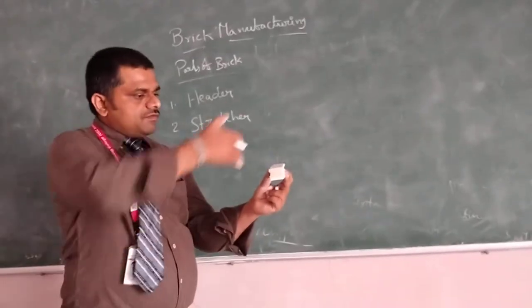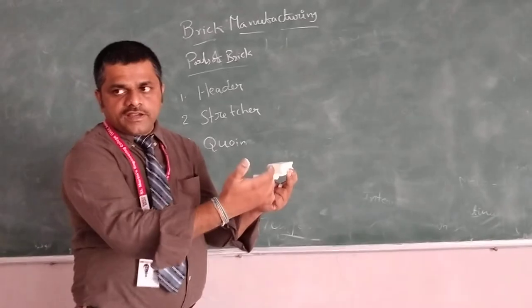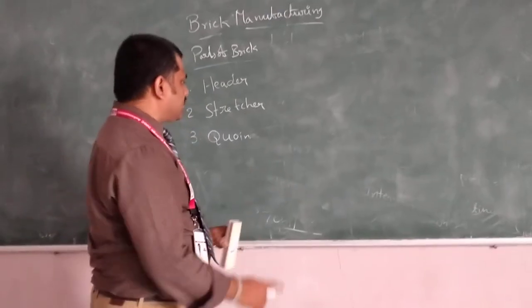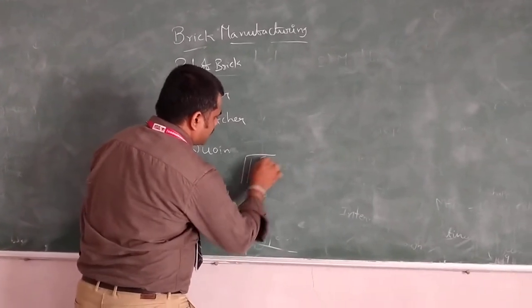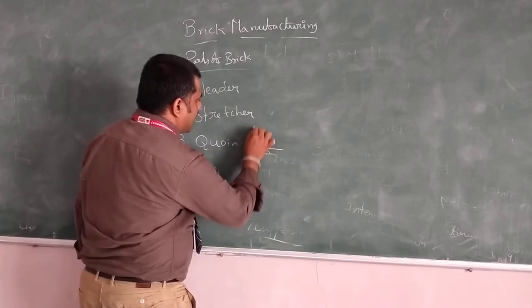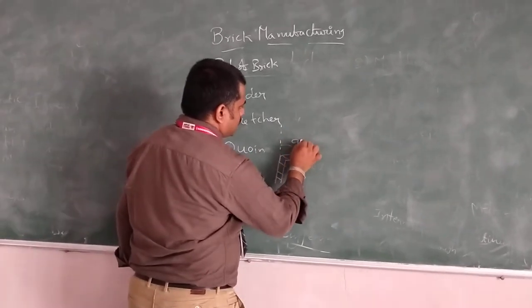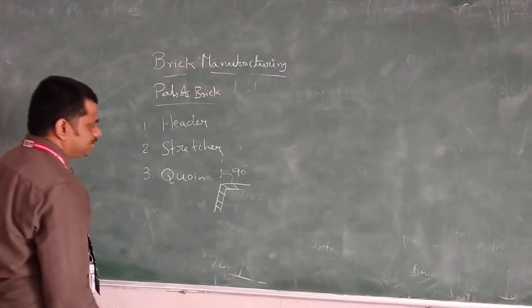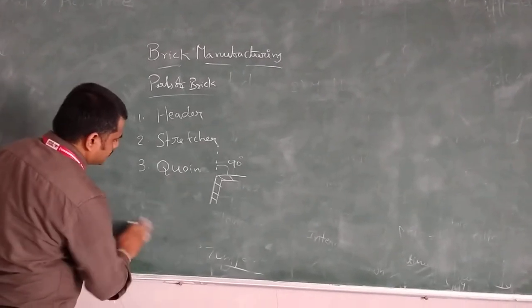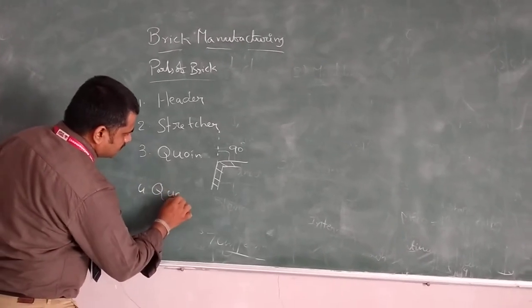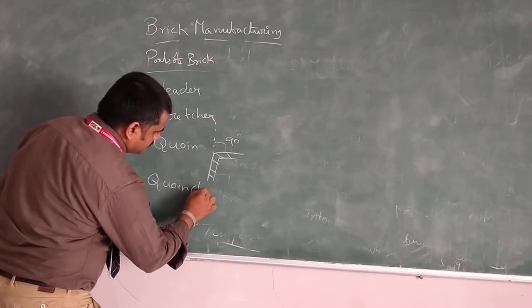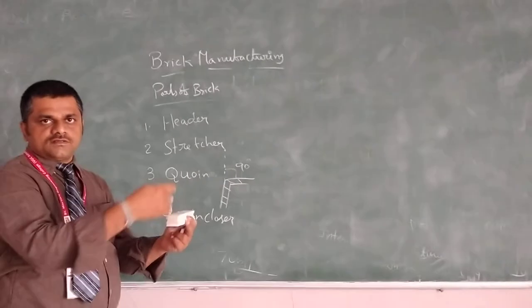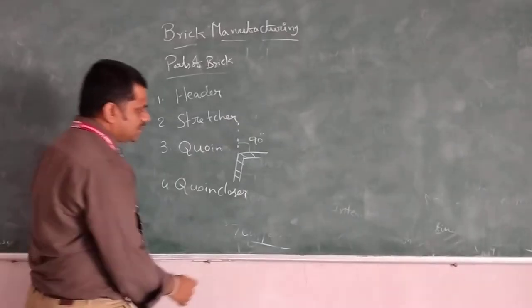Same brick, if we cut the center of the header exactly into two parts, that is king closer. King closer means the extra bonding is closure. King closer means this is header, exactly cut two parts in the header. That is king closer.